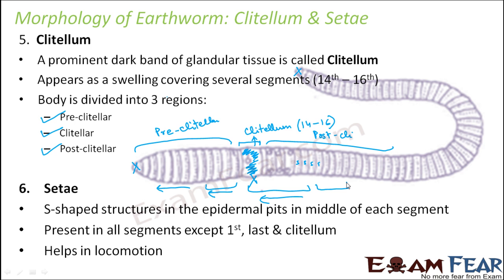Each segment contracts and relaxes independently so that the length of the body increases and decreases. If one portion expands, the length increases; when it contracts, the length decreases. As soon as one portion extends, the next portion starts extending, and that is how the earthworm moves. Segmentation provides both flexibility and strength in movement. So two things together help in locomotion: setae and segmentation, which synchronize with each other.